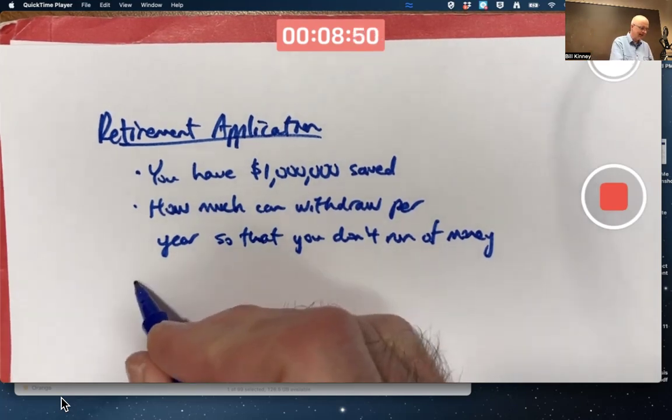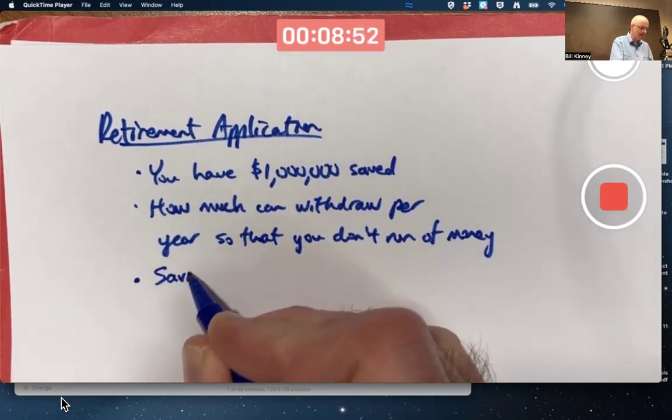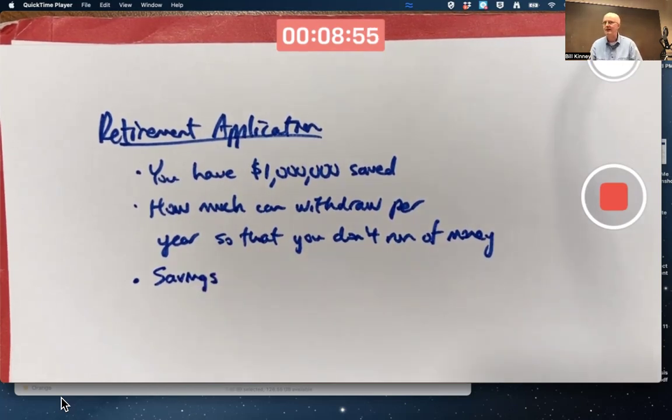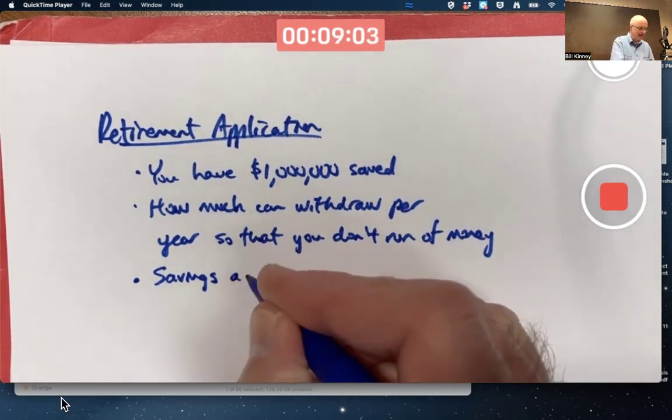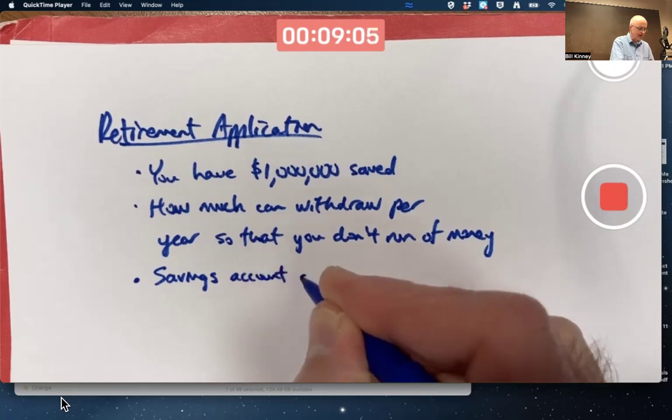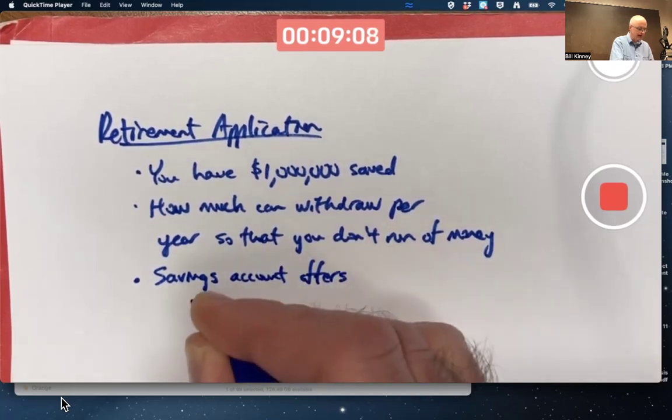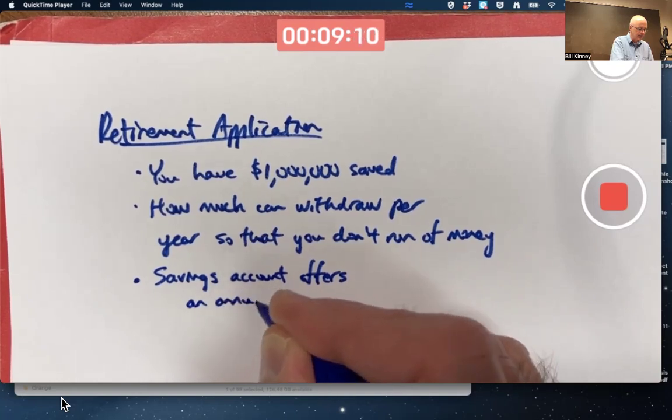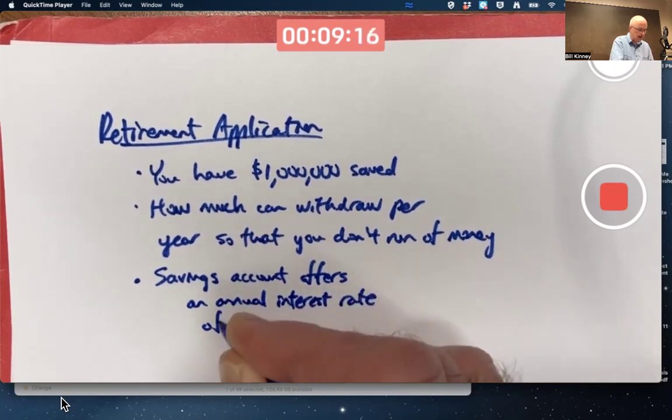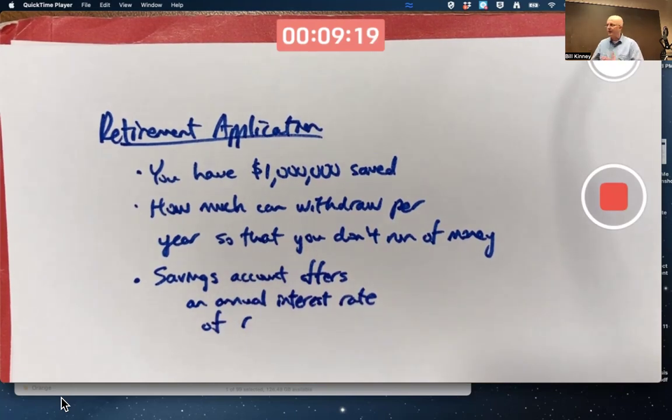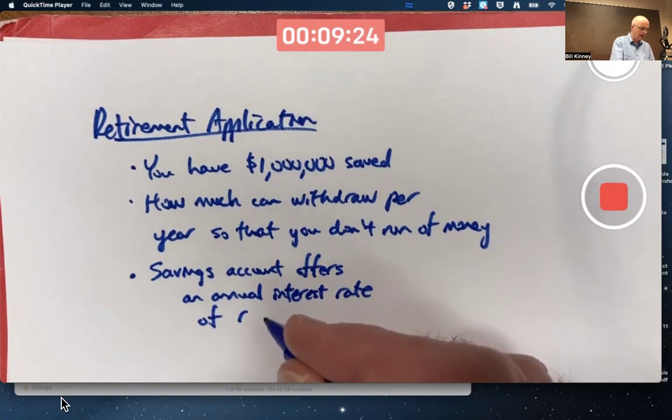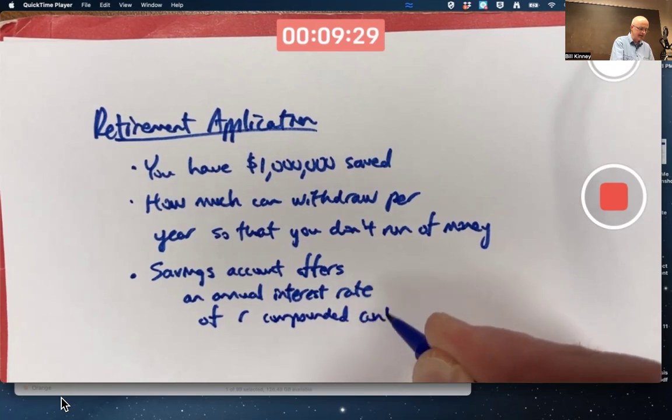assume it's in a savings account, even though you wouldn't really want to do this. You really wouldn't want to keep all your money in a savings account. It's just not enough interest. But just for the sake of simplicity, the savings account offers an interest rate, an annual interest rate of R where R might be 0.04 or 0.05 or whatever compounded continuously, giving you interest every second of every day.